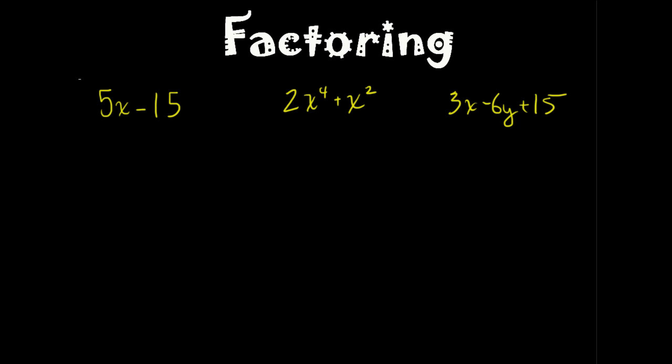For the first one here, we have 5X minus 15. What is common between these two terms in this expression? The 5. There's a 5 here and a 5 here, so I could factor out a 5. That'll leave me with X minus 3. If I distribute it back through, I get 5X minus 15, which is what we started with. The factored answer—if it says factor this expression—the answer is 5 times X minus 3. You're not really solving for anything. Factoring's just about manipulating information, kind of like using it like it's Play-Doh or something.